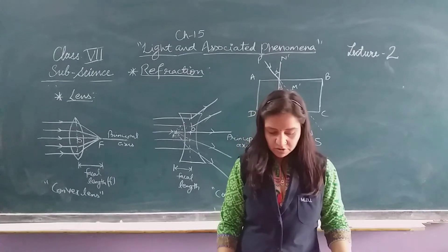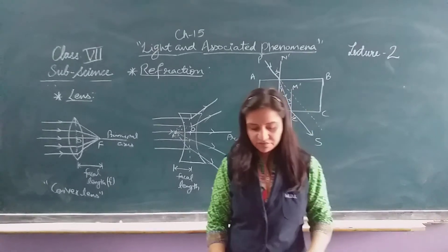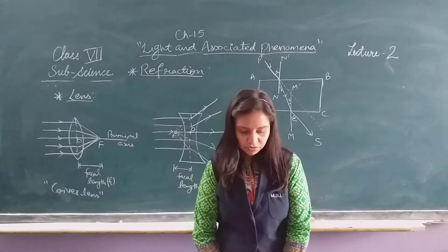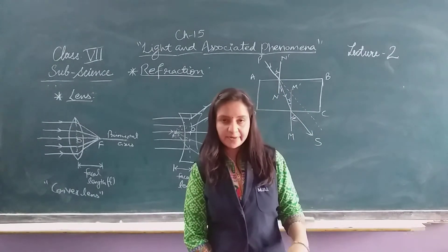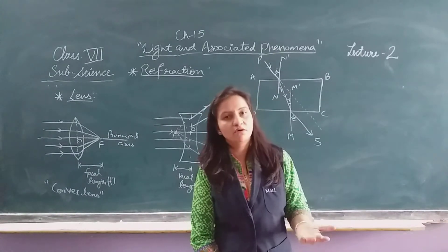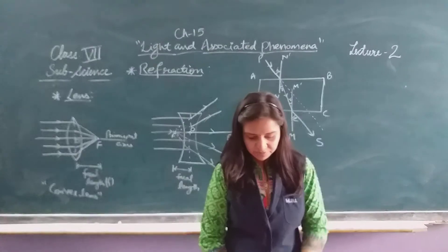When an object is placed close to a convex lens, the image produced is a virtual image, upright, magnified, and appears bigger.